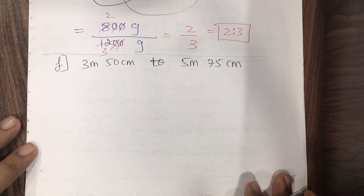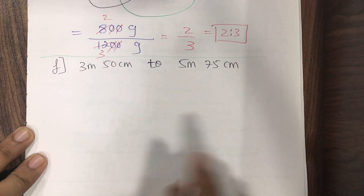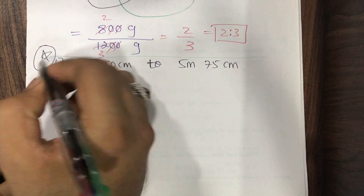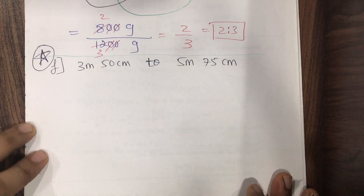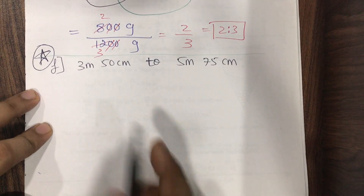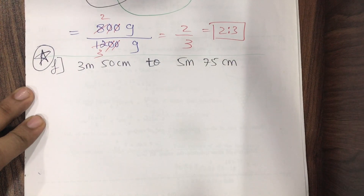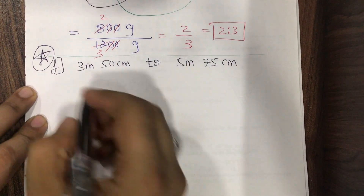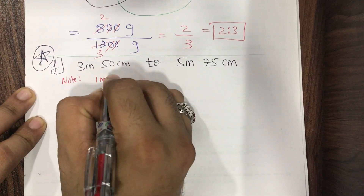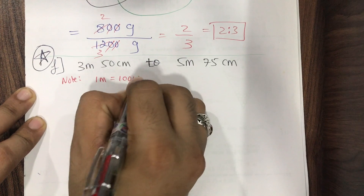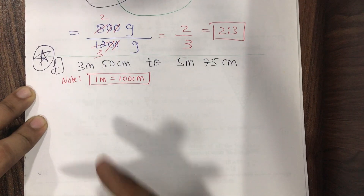Now sub-question F — I'll mark a star here, it's a very important question. It's the same type but with more conversion. The question deals with meters and centimeters. Note: 1 meter = 100 centimeters. Let's start.